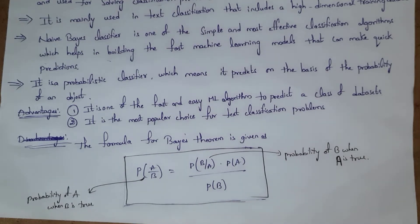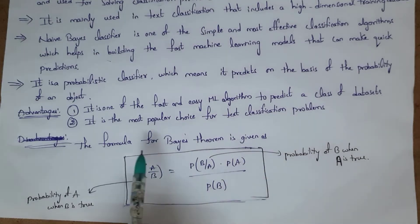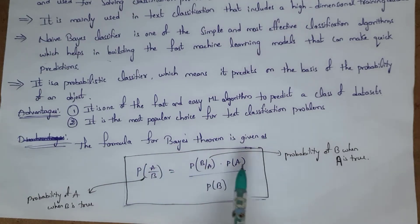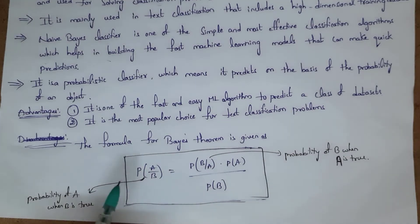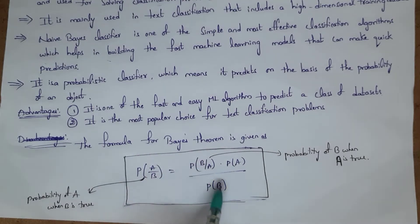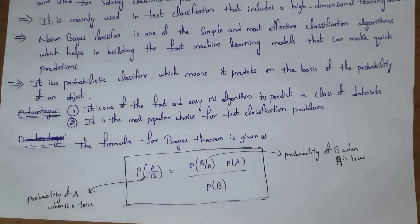We solve Naive Bayes classifier problems using Bayes' theorem. The formula of Bayes' theorem is: probability of A given B equals probability of B given A, multiplied by probability of A, divided by probability of B. Probability of A given B means the probability of A when B is true. Probability of B given A means the probability of B when A is true.